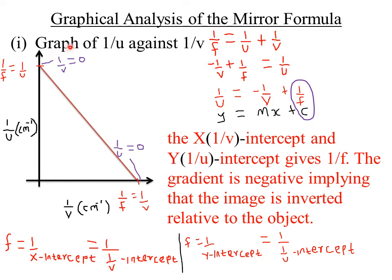The first graph we are analyzing is a graph of 1/u against 1/v. When a statement is written this way, it means 1/u will always be on the vertical axis or y-axis, and 1/v will always be on the horizontal or x-axis. The variable that comes after 'against' always goes to the horizontal axis.